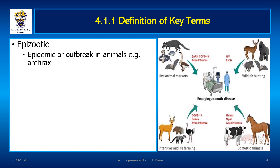Understanding epizootic, enzootic, and exotic diseases is crucial for understanding the interaction between humans and animals and the transfer of diseases between the two populations. Epizootic diseases are essential to monitor as they can lead to significant economic losses in agriculture, affect food supplies, and sometimes directly impact human health. For instance, anthrax can affect both animals and humans. Bird flu transmitted between birds can be passed to humans, as can H1N1 influenza virus among pigs. By controlling epizootics in animals, the risk of transmission to humans can be minimized.